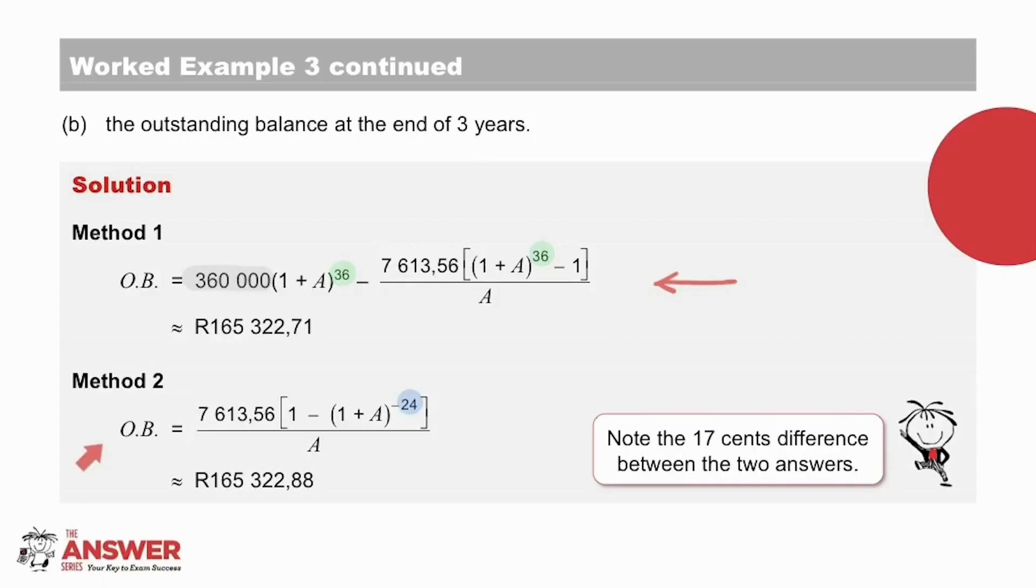In other words, with this information we can use the present value method. You may note that there is a 17 cents difference in the answers. This occurs because of that rounding off of the value of X, the repayments. You're welcome to pause the video at this point to have a good look at both of these methods.